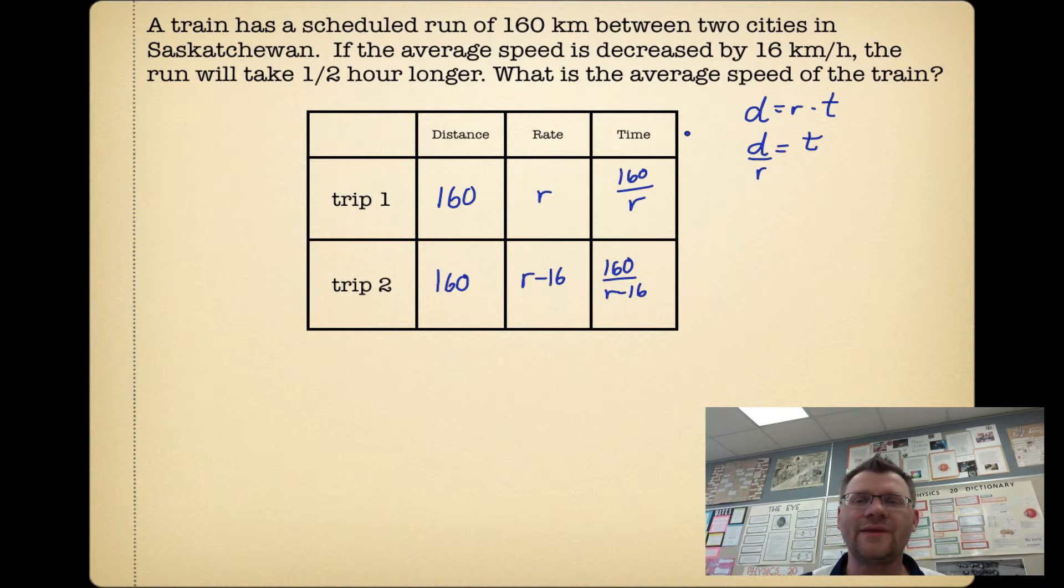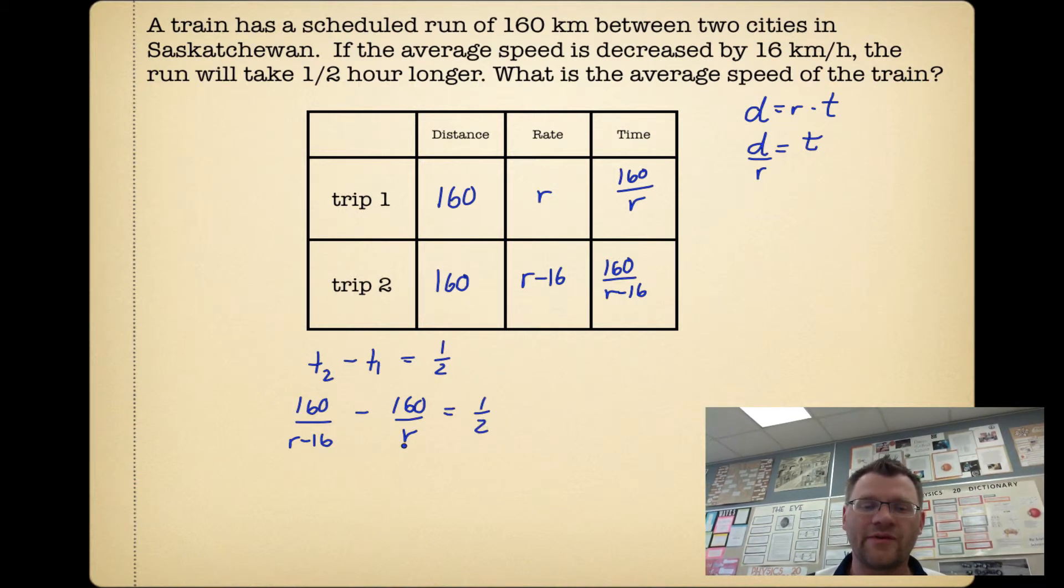It says if we decrease the speed, the time is going to take half an hour longer. So that means trip number 2 minus trip number 1 should be a difference of half an hour. So the time for trip 2, 160/(r-16) - 160/r = 1/2. Once again, we're going to multiply by all the denominators to cancel them out. That means we have to multiply by (r-16), by r, and by 2. When I multiply by (r-16), r, and 2, the (r-16) cancels out here. I get 160(r)(2). For the second fraction, the r cancels out, so I have 160(2)(r-16). And for the last fraction, the 2 cancels out, and I'm left with r(r-16).